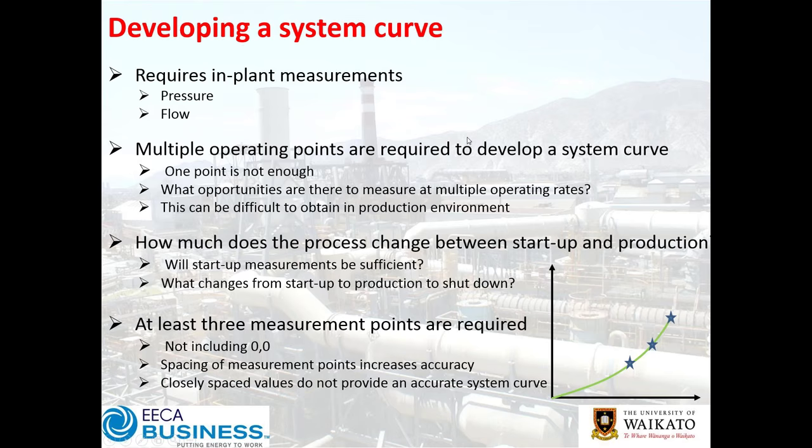To develop a system curve we need to actually measure pressure and flow — theoretically looking at it is not going to cut the mustard. Multiple operating points are required; one point is not enough. One point just tells you the fan can do a certain pressure at a certain flow — it has no indication of how steep the curve is. We try to have at least three points, and obviously the more points we have the better.